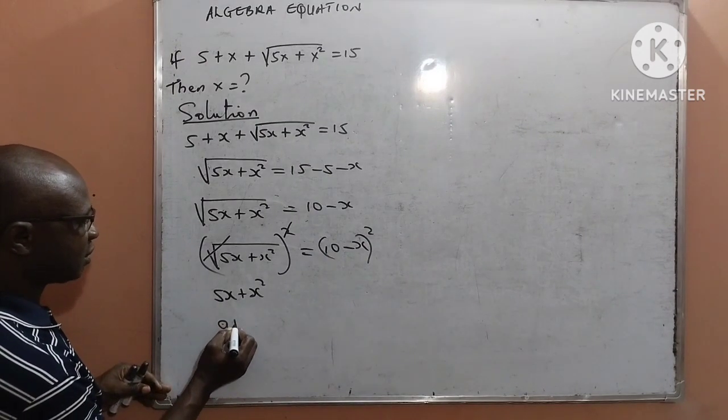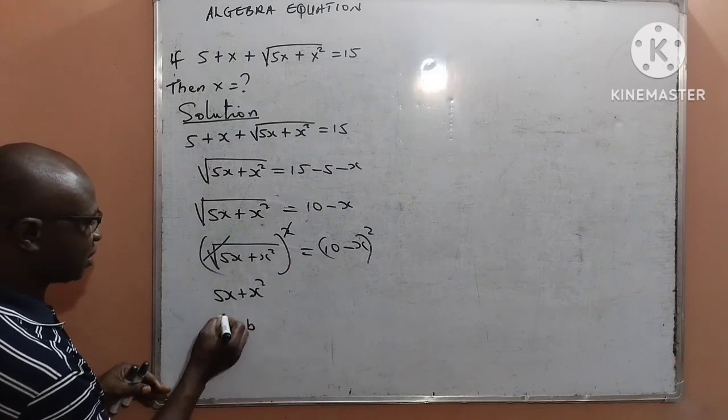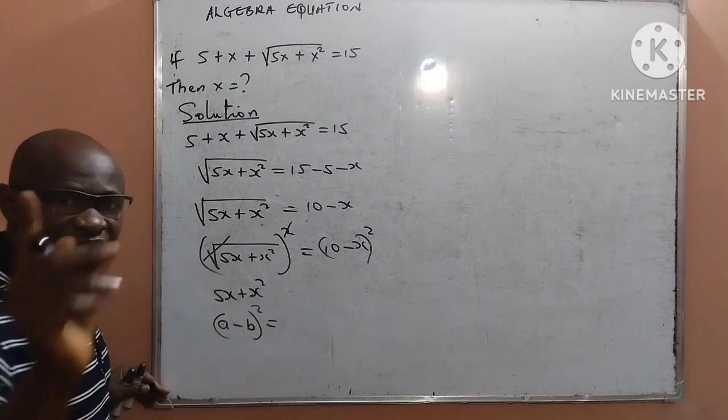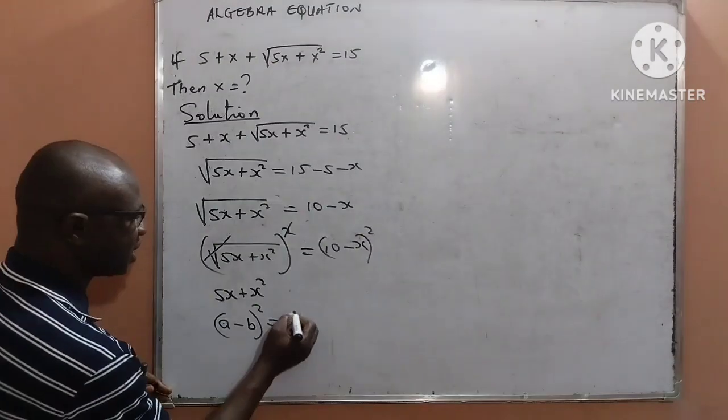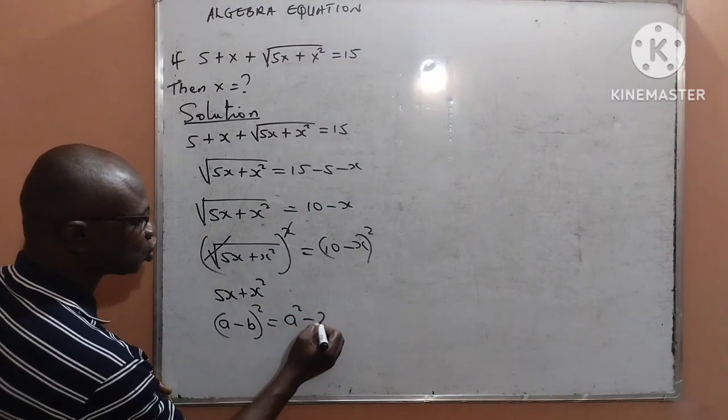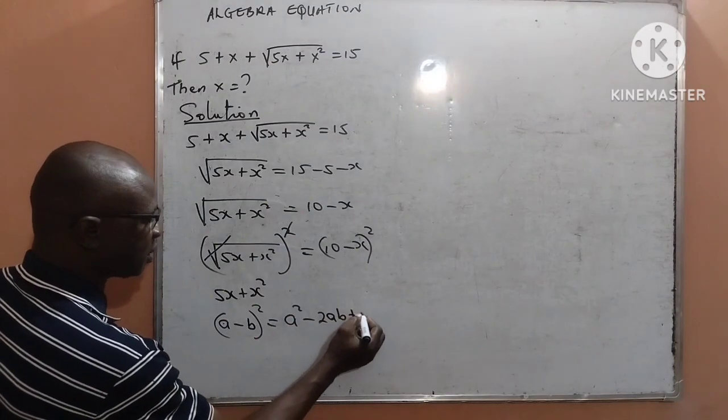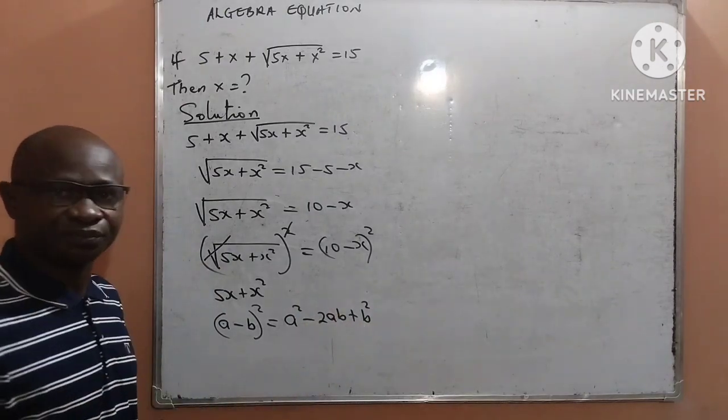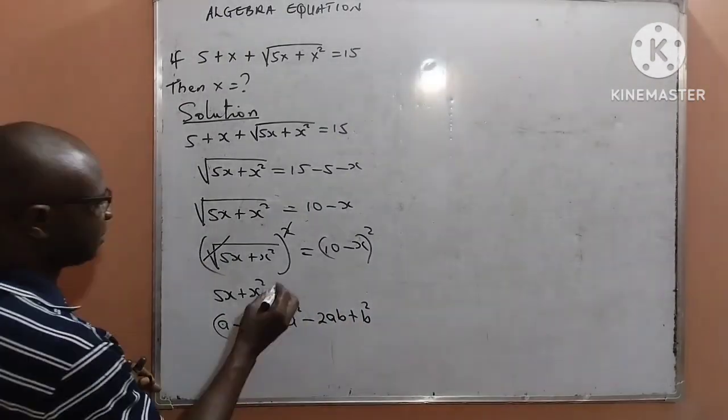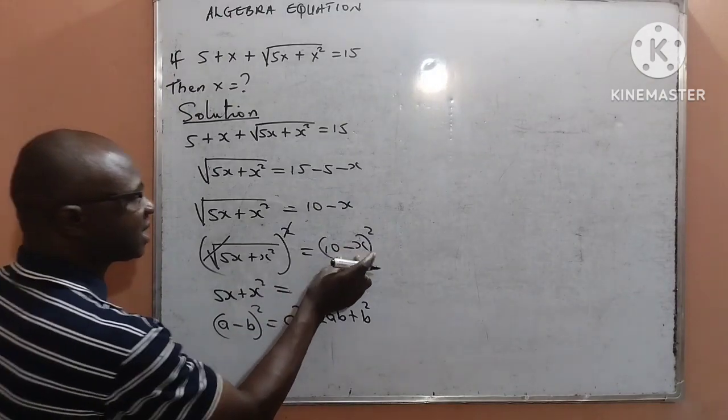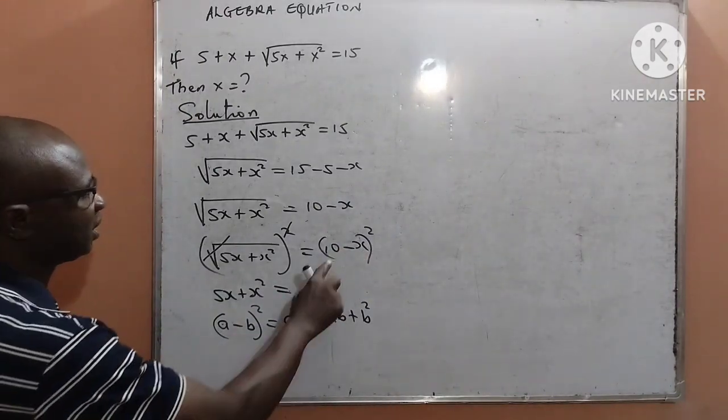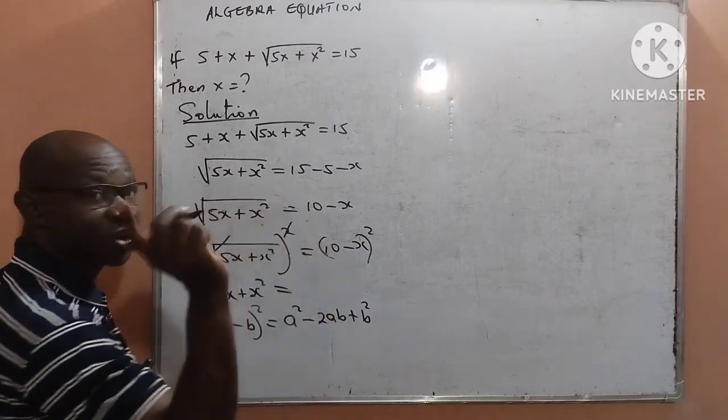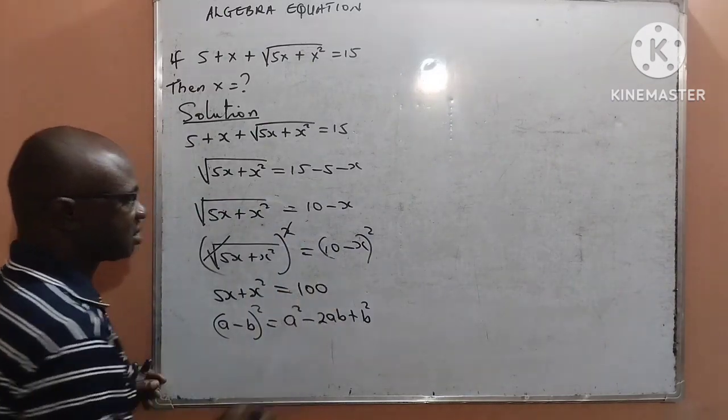If I have a minus b squared, it is going to result to a squared minus 2 multiplied by ab plus b squared. Now, going by this expansion, it implies that what we have here by the right hand side will be 10 squared will give me 100.